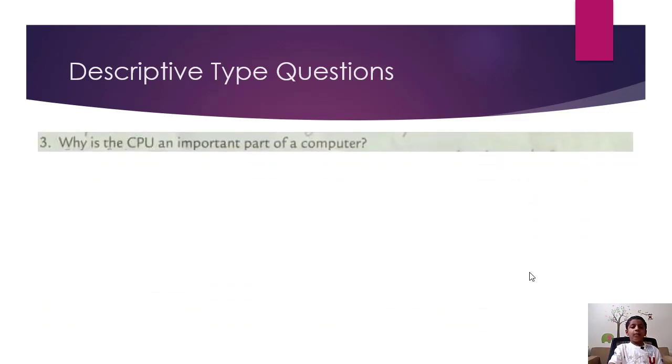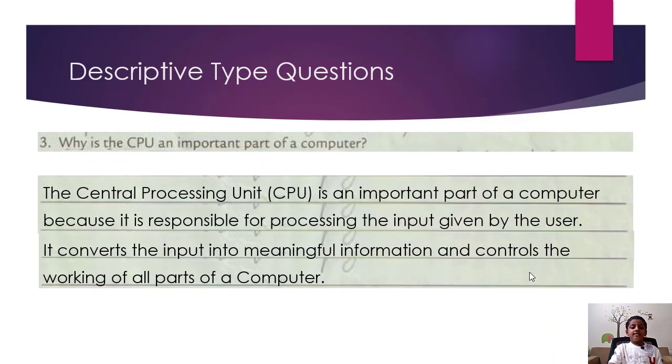Third, why is the CPU an important part of the computer? So the answer is the Central Processing Unit CPU is an important part of a computer because it's responsible for processing the input given by the user. It converts the input into meaningful information and controls the working of all parts of a computer.